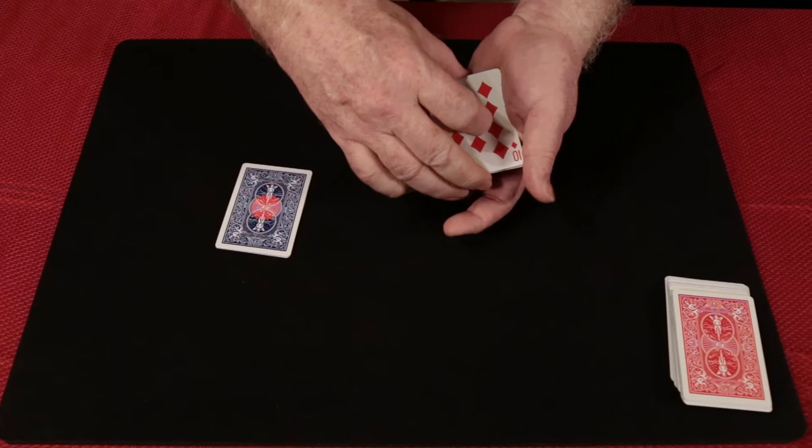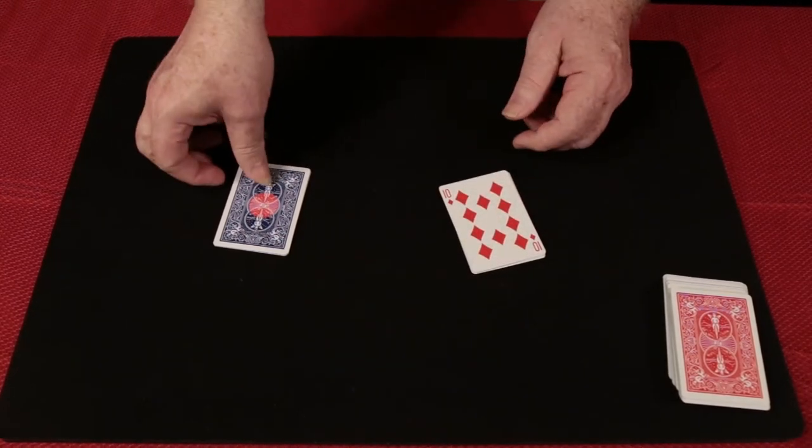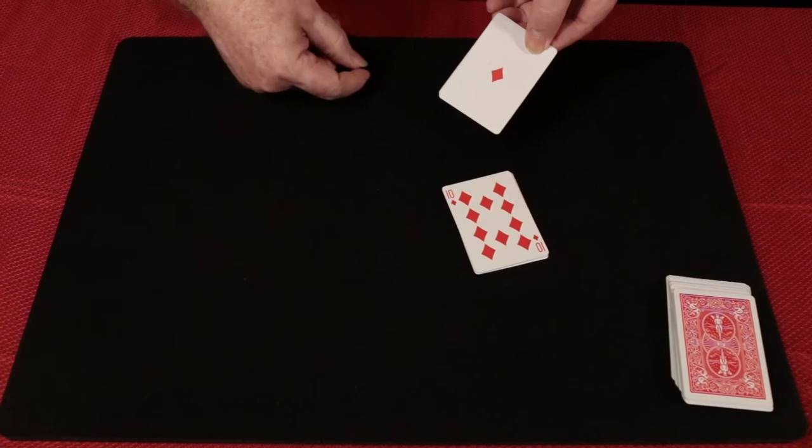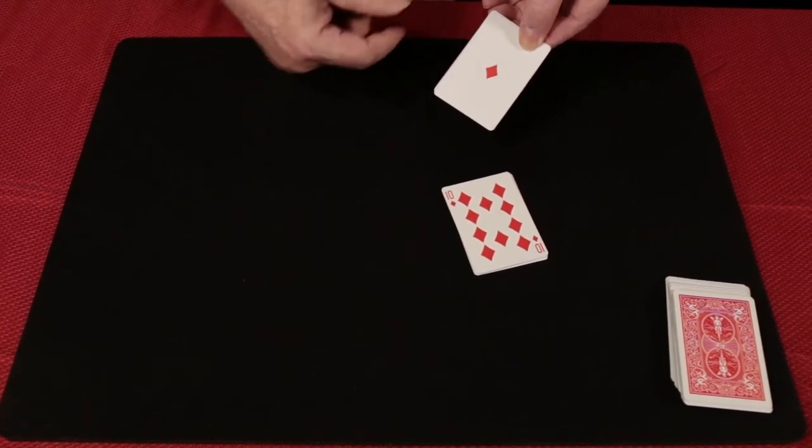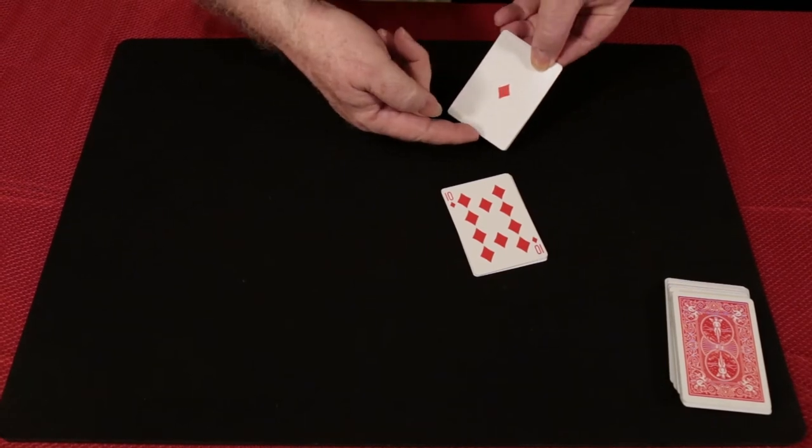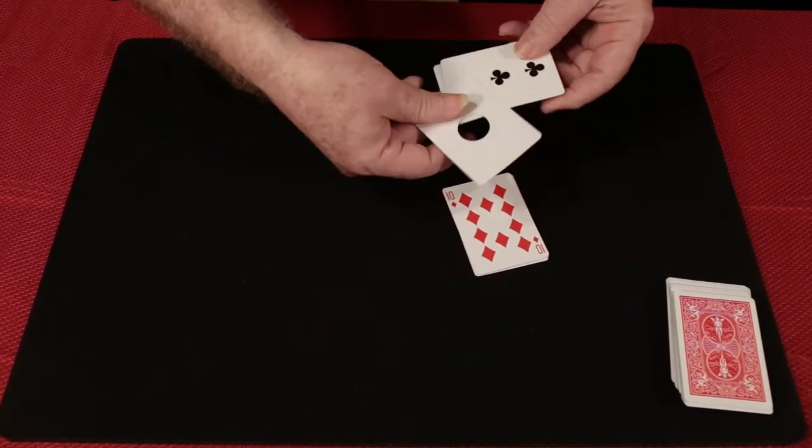But fortunately, I remember that right over here I just happen to have an ace of diamonds. That's my ace in the hole. Now, if only I could get it from here into that packet. How is that done? We just give it a quick flick like that.